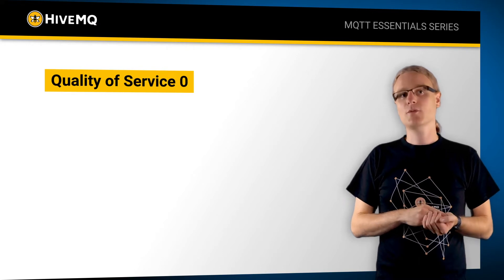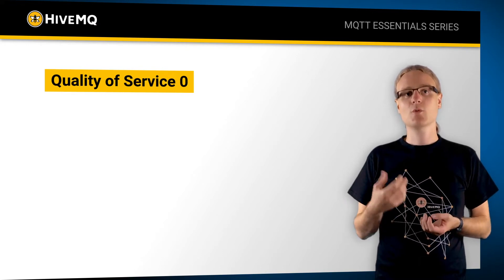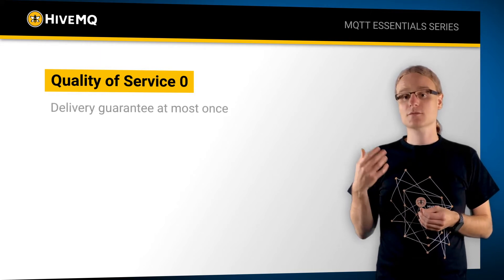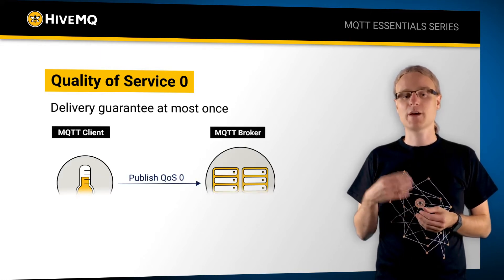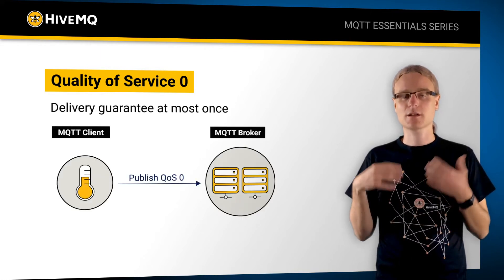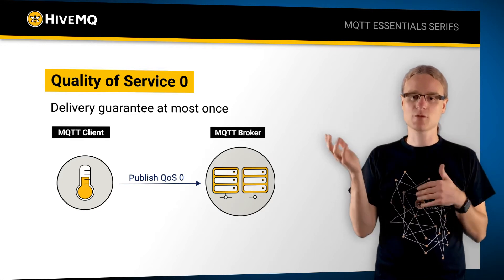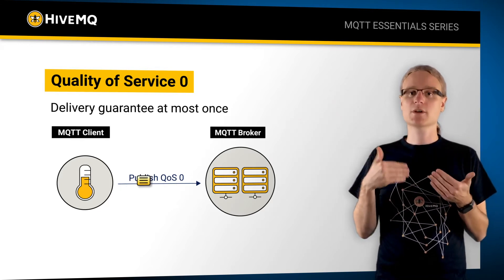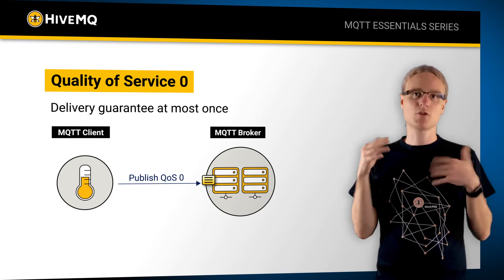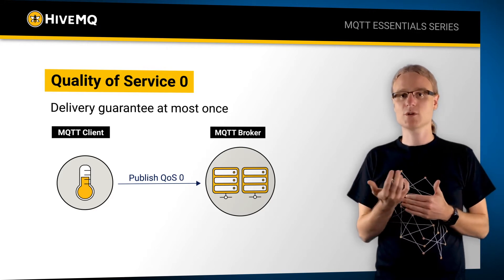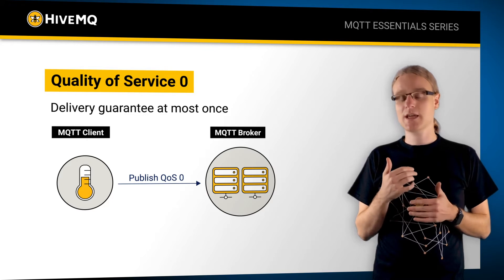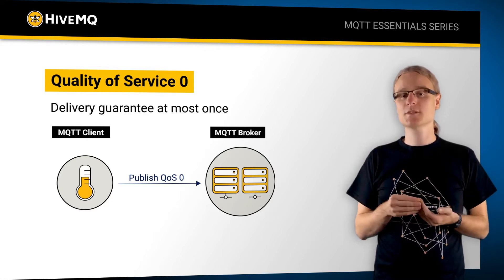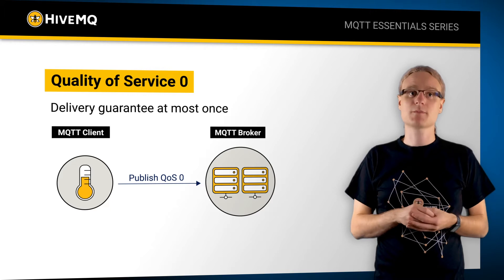Let's begin with quality of service zero. Quality of service zero means at most once delivery — fire and forget. A client publishes something to a broker, or the broker to the client, and there is no acknowledgment. We send a raw packet with no acknowledge at all, which means a message can be lost for any reason and none of the participants recognize that this happened.